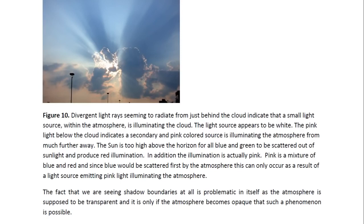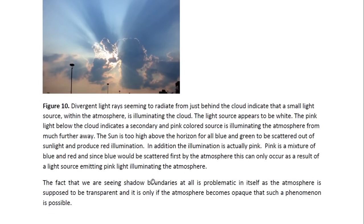As sunlight moves toward sunset, blue is scattered out first, then eventually green starts being scattered out. But to get pink light, we'd have to have the green scattered out while the blue was not — and that's just not possible. So the only way to produce pink light in the atmosphere is if the atmosphere is being illuminated by a light source that is actually emitting pink light.